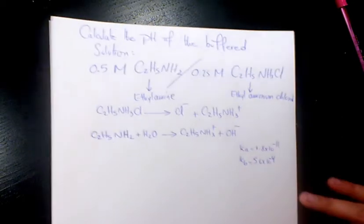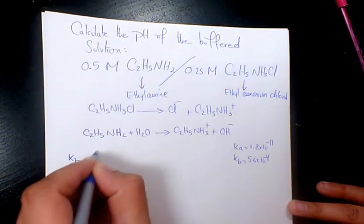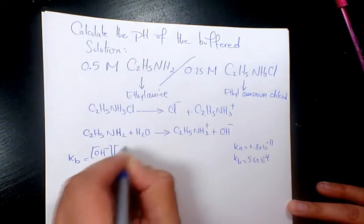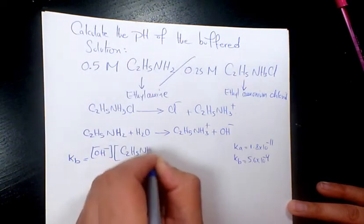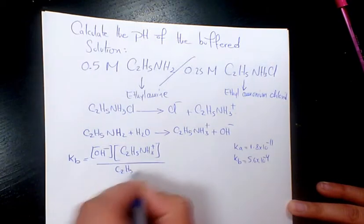So I can say KB equals OH minus times C2H5NH3 plus divided by C2H5NH2.